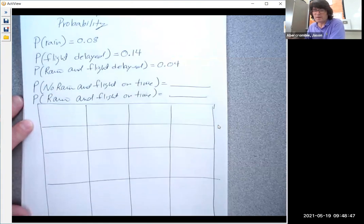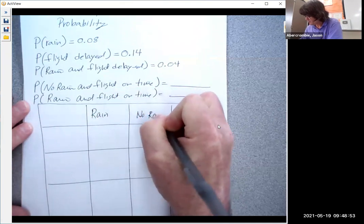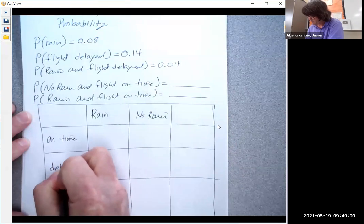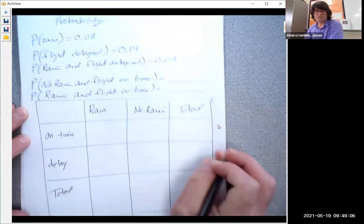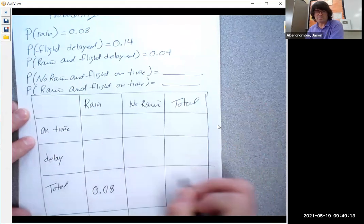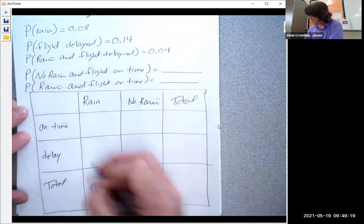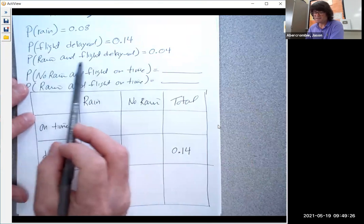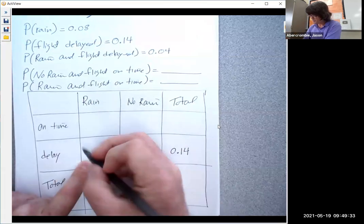So what we're going to do is we're going to make a table. We're going to have rain and no rain, and we're going to have on time and then delayed. And here we're going to have total and total. So the way this works is you first of all take the chance of rain. The total probability of rain is 0.08. And then for the flight being delayed, the total chance of that is 14%. So 0.14 goes here. The chance that we have rain and the flight is delayed—here's rain, here's delay—so this box is rain and delayed. This is 4%.